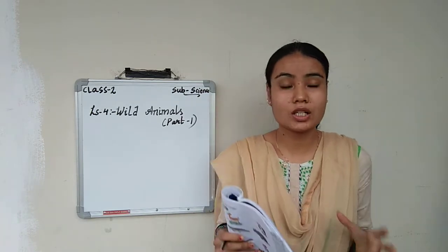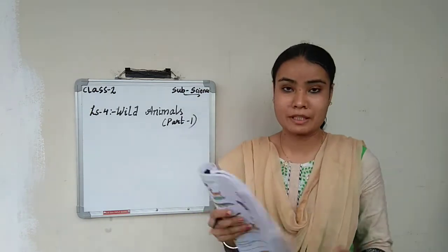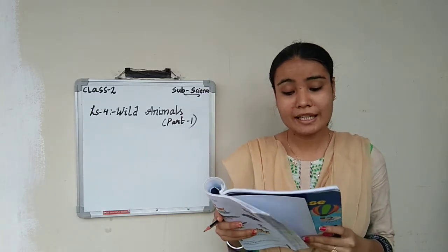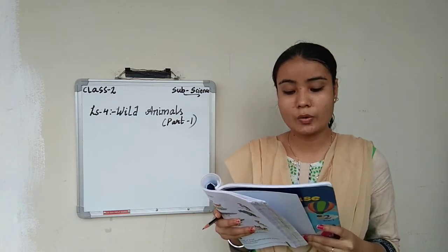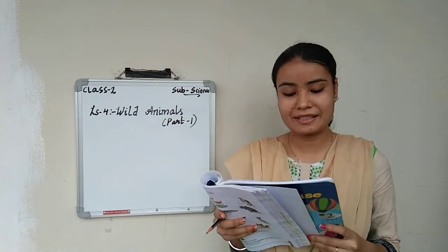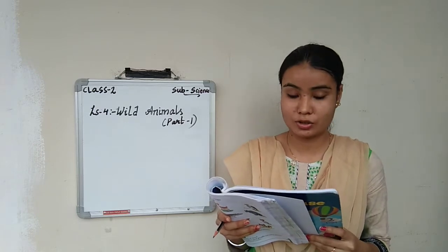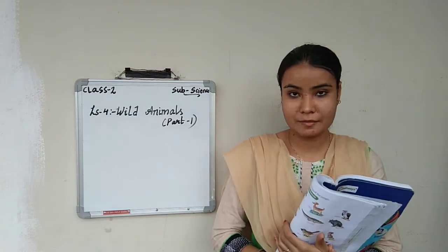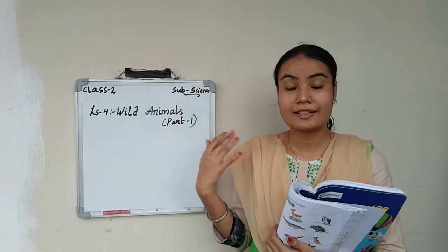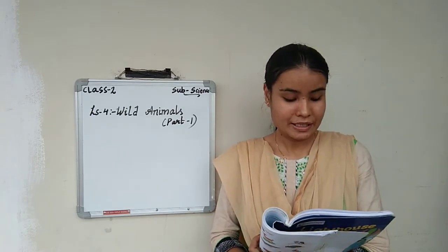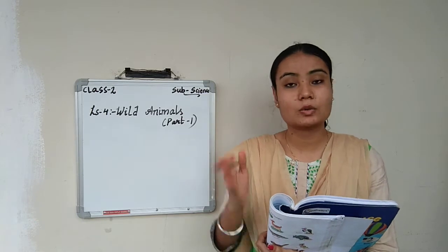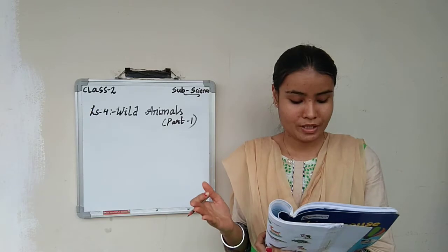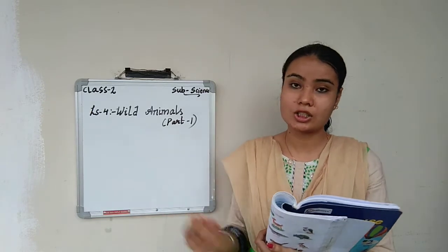This lesson is all about wild animals — jungli janwar ke baare mein. Many animals live freely in jungles; they are called wild animals. They are of different shapes and sizes. We can see some wild animals in a zoo. We have pet animals at home, called domestic animals. But few animals we can find in the jungles — those are called wild animals. And few wild animals we can find in the zoo also.